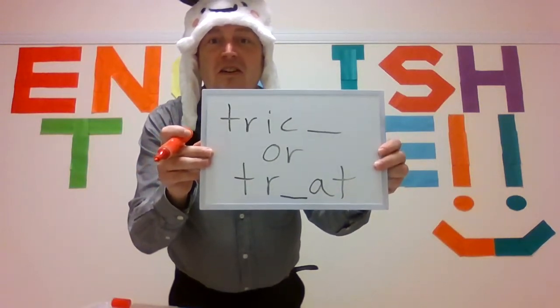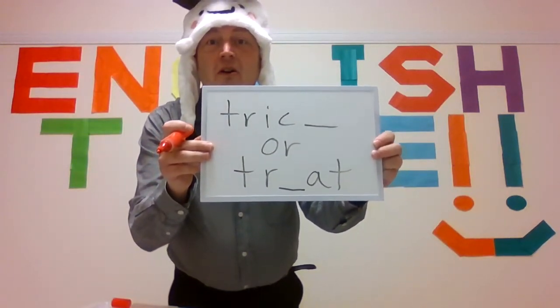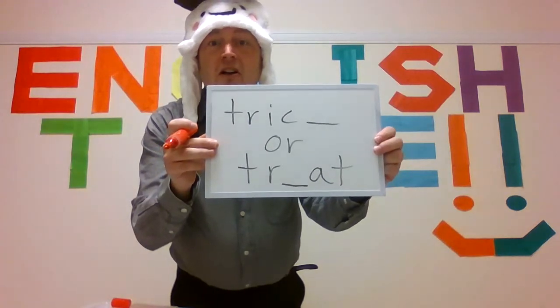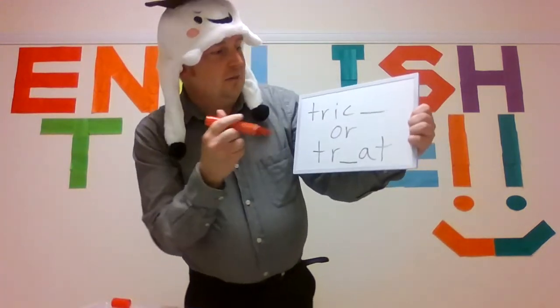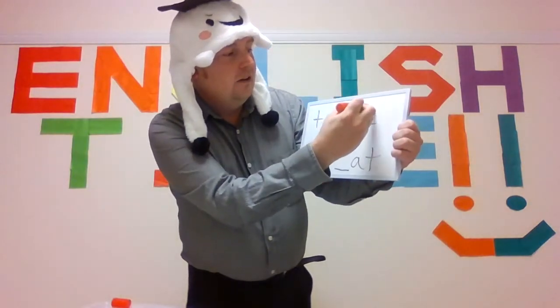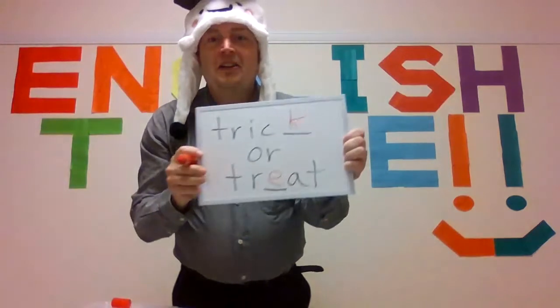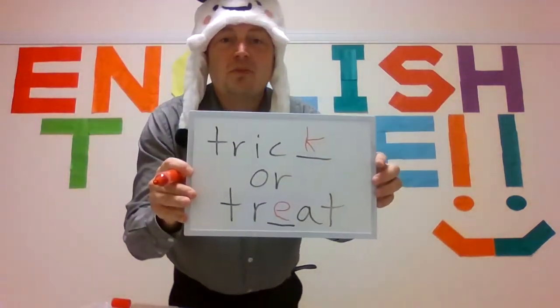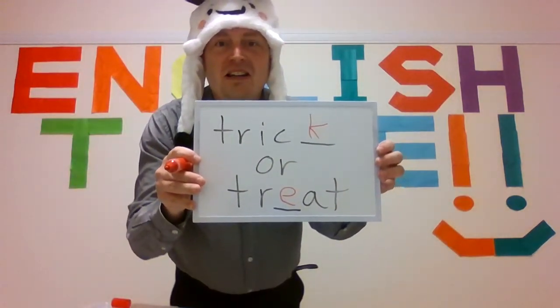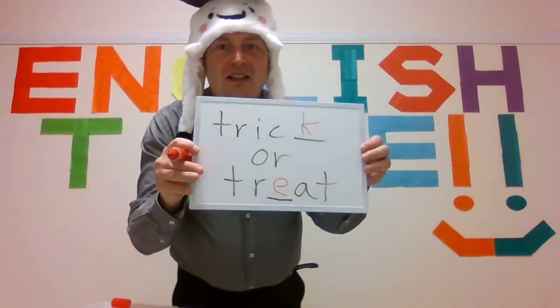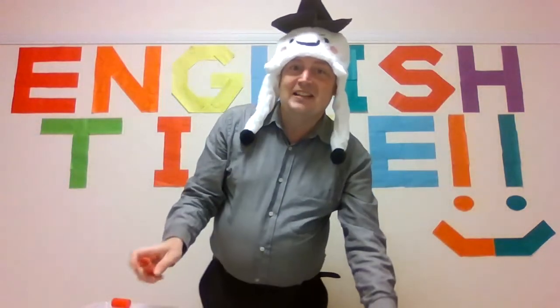The last one for Halloween is trick or treat. Five seconds: five, four, three, two, one. The answer is K for trick and E for treat. Please repeat: trick or treat, trick or treat.